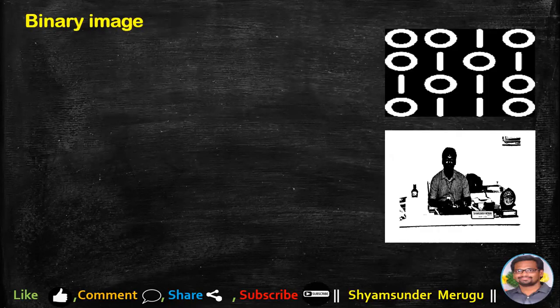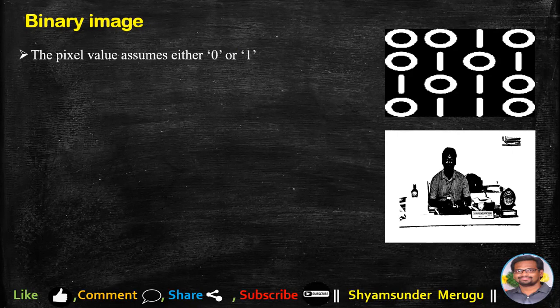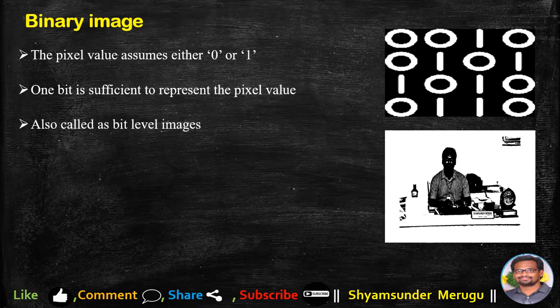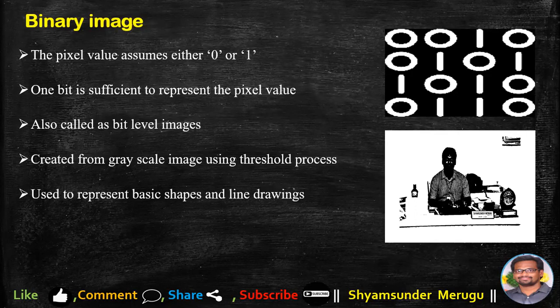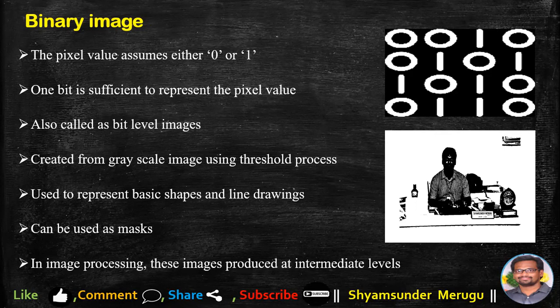Coming to binary images. As the title itself says, there are two possible pixel values, either 0 and 1. So 1 indicates white and 0 indicates black, so the pixel values assume either 0 or 1. So 1 bit is sufficient to represent the pixel values. These are also called as bit level images. They will be created from a grayscale image using a threshold process. These binary images are used to represent basic shapes and line drawings. They can be used as masks, and in image processing these images are produced at intermediate levels.